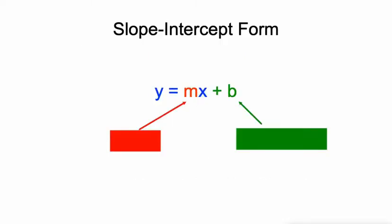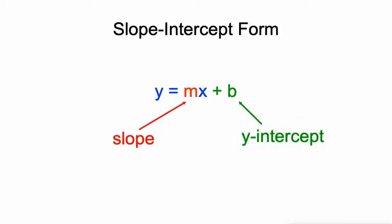So slope-intercept form, reminder, is y equals mx plus b, where m, that number being multiplied by x, is our slope or our constant rate of change. And the b value there is our y-intercept, the value of y when x is 0.